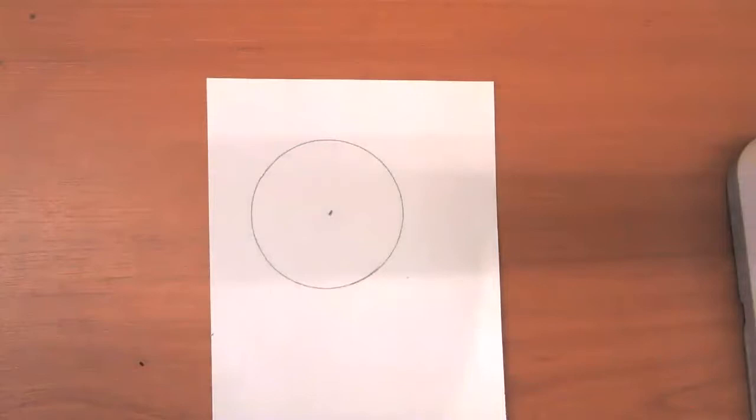If I asked you to draw a circle, I know that everybody in the class would draw the same shape. Why is it that we're all drawing this shape? What is it that's special about this shape that makes this a circle?